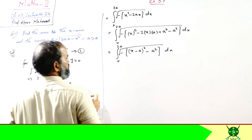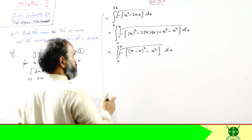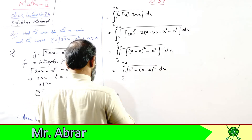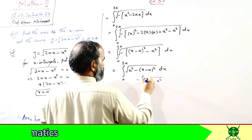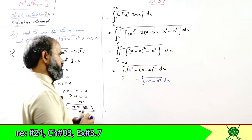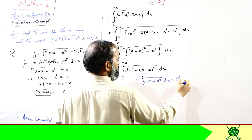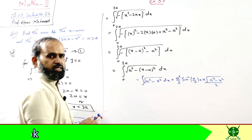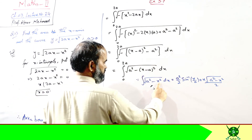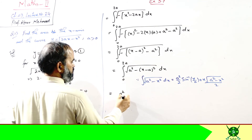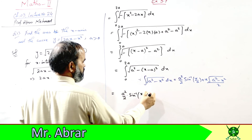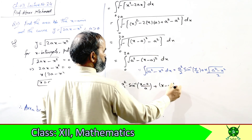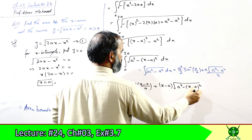This is of the standard form √(a² − x²), which has the formula: (a²/2) sin⁻¹(x/a) + (x/2)√(a² − x²) + C. Here, the role of x is played by (x − a), so the answer becomes: (a²/2) sin⁻¹[(x−a)/a] + [(x−a)/2]√[a² − (x−a)²], evaluated from 0 to 2a.